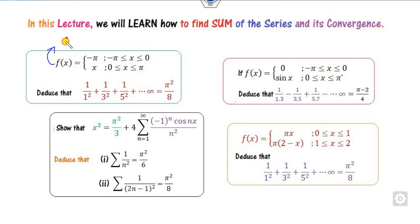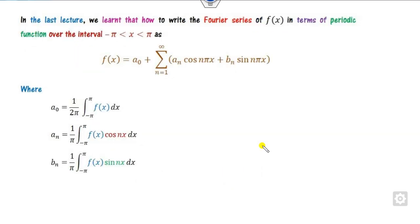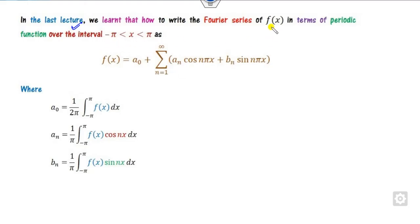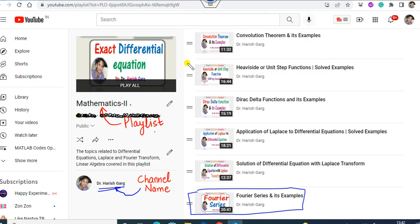The first step is to find the Fourier series, and then we will see under what conditions it converges and what the sum of the series is. In the last lecture, available on the playlist on the Mathematics 2 channel Dr. Hrishgarh, we learned that you can write any periodic function in terms of sine and cosine — that is, the Fourier series — where a0, an, and bn are defined as shown here.